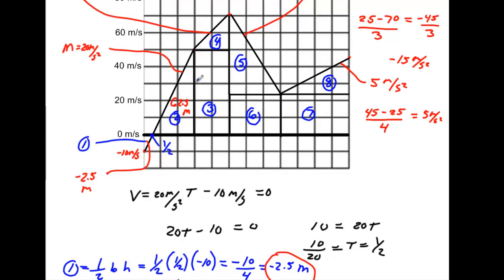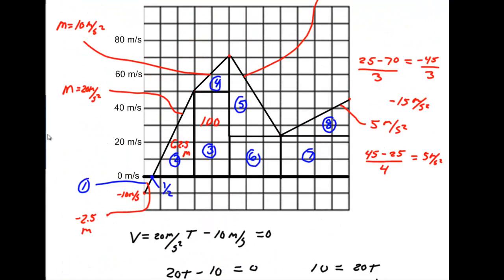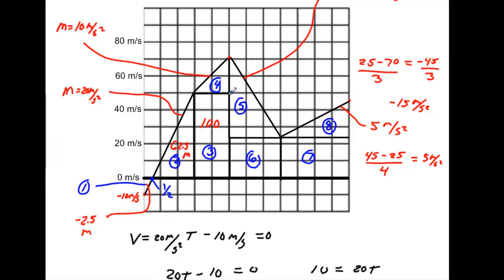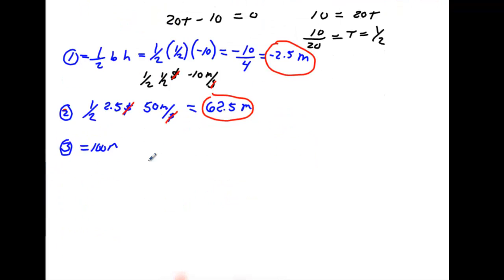Area 3 is a rectangle: height of 50 going over two seconds, so that's 100 meters. Area 4 is a triangle: base of two seconds, height of 20 m/s — one-half times two times 20 is 40, divided by two gives 20 meters. So area 4 is 20 meters.